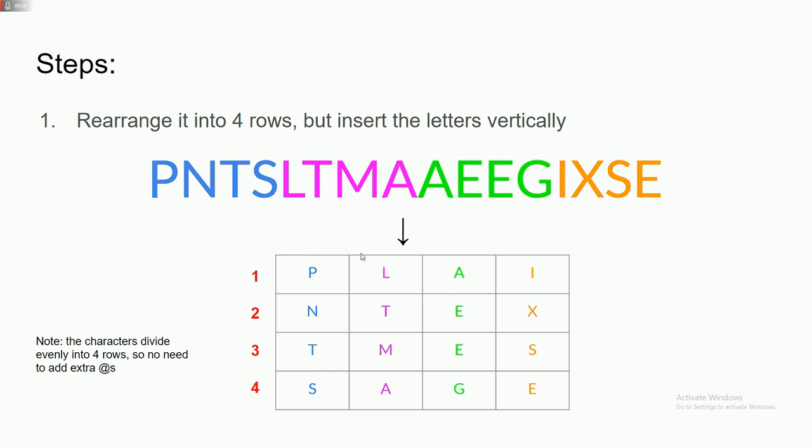PNTS in column one, LTMA in column two, EEG in column three, so on and so forth. And you can see that, again, there's no need for extra ats because plain text message has exactly 16 characters, and 16 characters will split evenly into four rows.